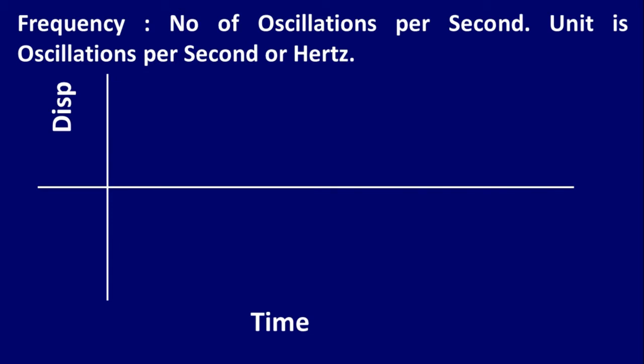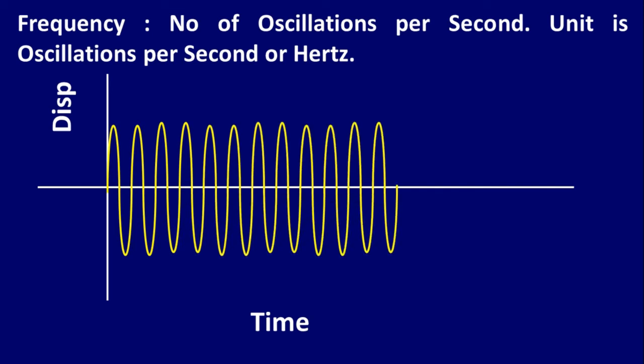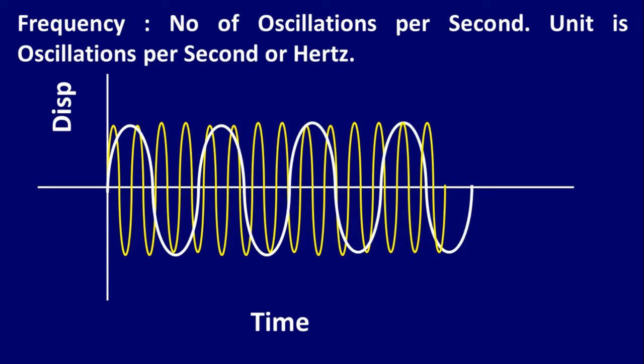Let us see what happens when we increase the frequency of the sound. Number of oscillations have increased in the yellow wave. In the white wave, the number of oscillations per second is less.